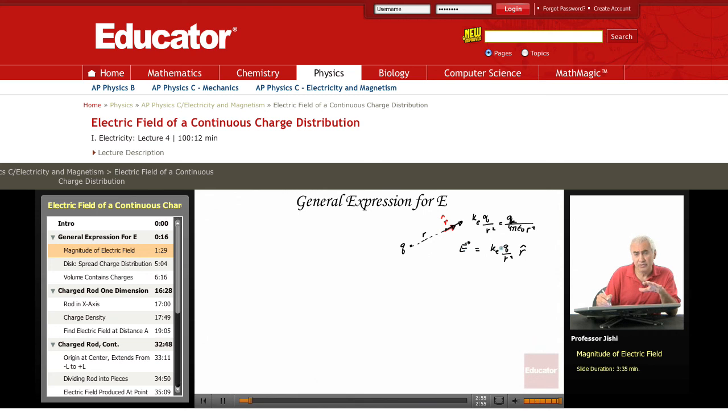So if Q is positive, this quantity here is positive times R hat, so this gives me a vector with a magnitude equal to this much, and its direction is radially out. If Q is negative, then the quantity here is negative. So, I get E, a negative quantity times R hat. So, this means that E now is radially inward, that is, its direction is opposite to R hat, because it's a negative times R hat.